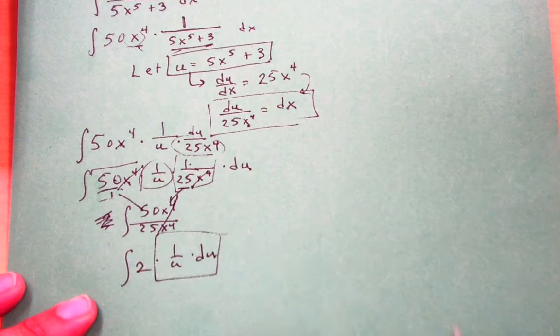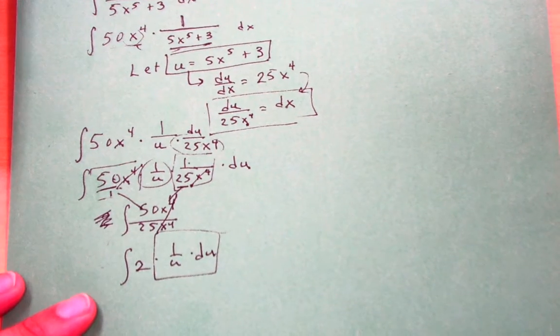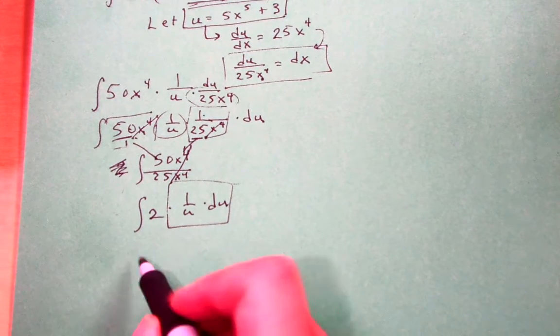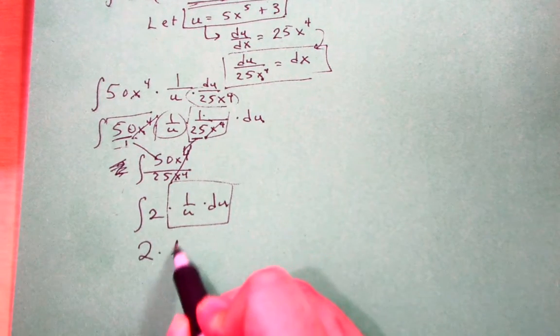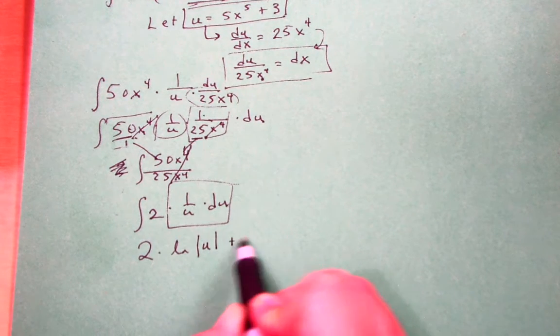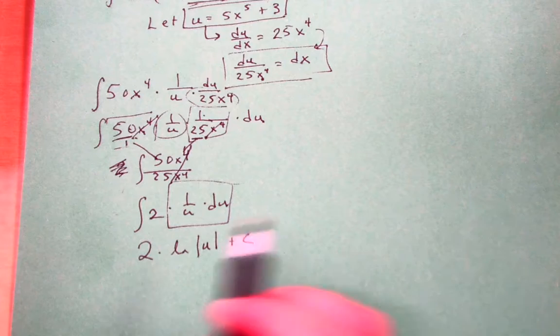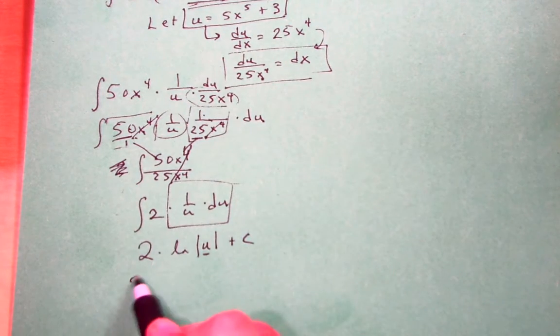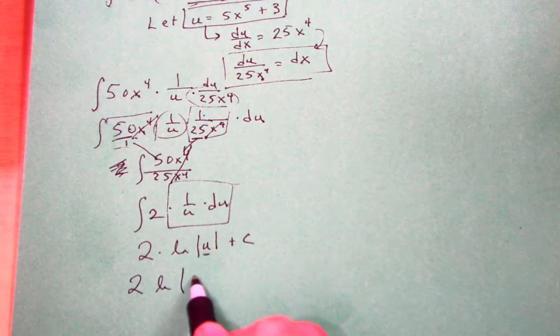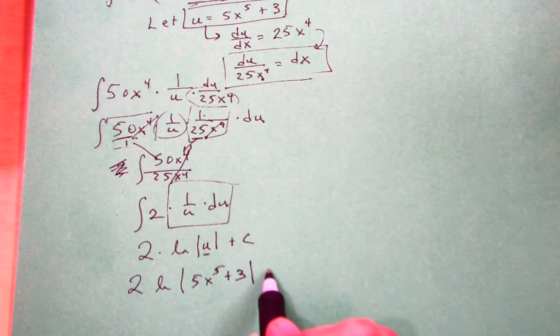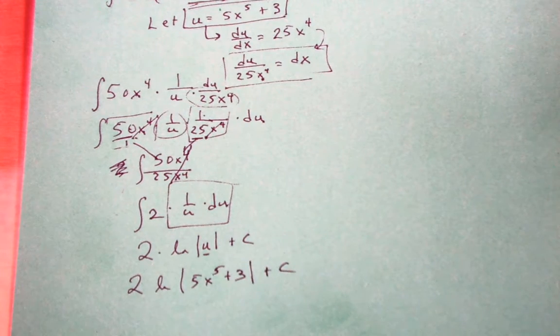Well, hopefully you recognize that the integral of 1 over something is going to be ln of that something. And of course, we talked about the rule of the absolute value. So ln of the absolute value of u plus c. And u, we already said, was 5x to the 5th plus 3. So this becomes 2 ln absolute value 5x to the 5th plus 3, all of which is added with c.